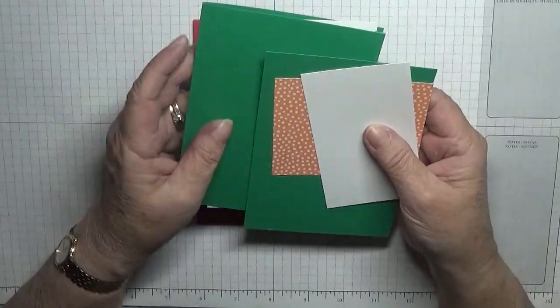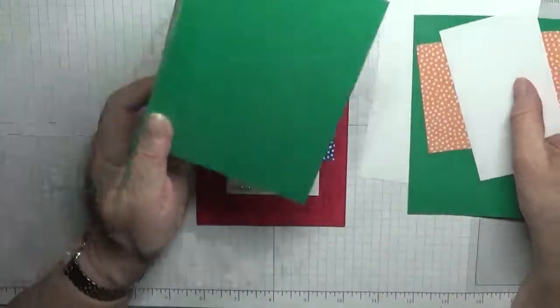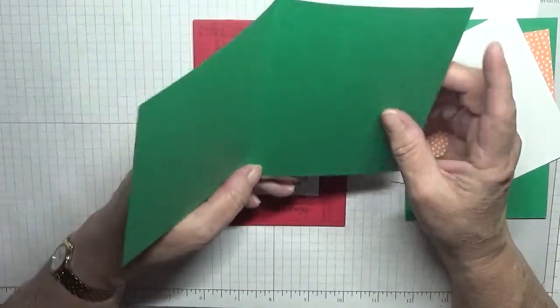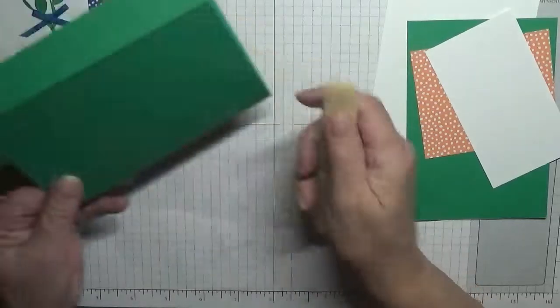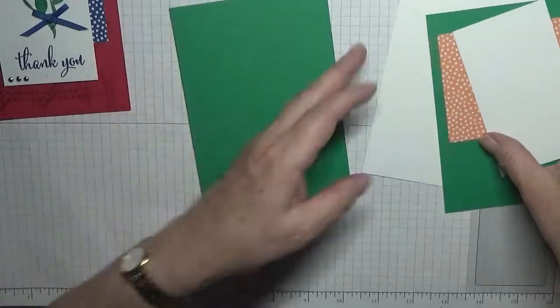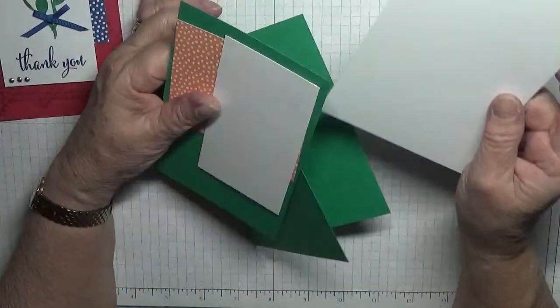The cards I am using are last year's in colors. I have a card base of Call Me Clover, 8 and a quarter by 5 and 7/8, scored at 4 and 1/8, folded in half and burnished. I have a piece of white cardstock at 5 and 5/8 by 3 and 7/8 for the inside.